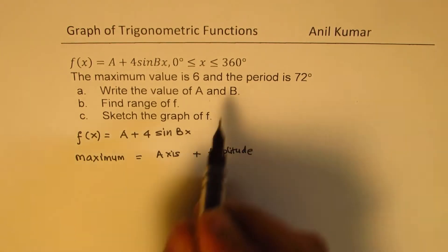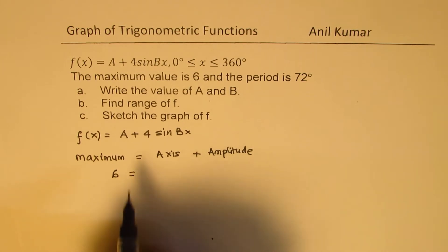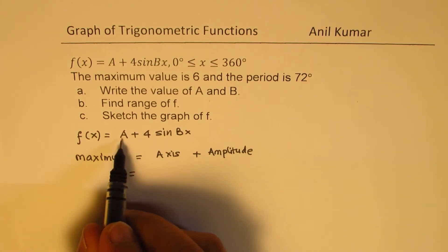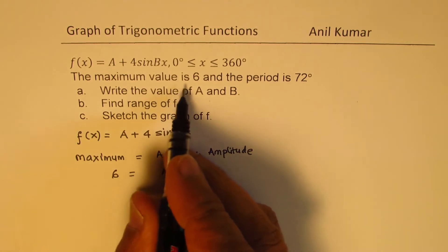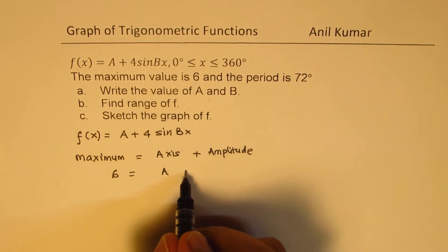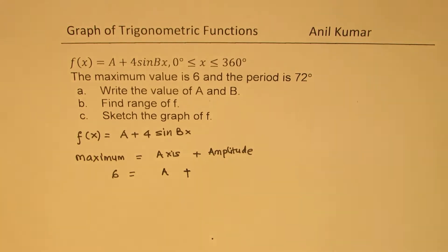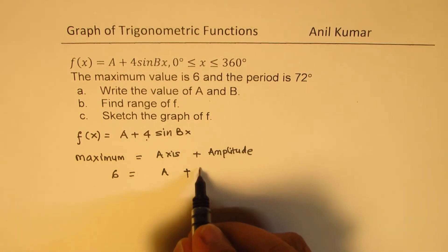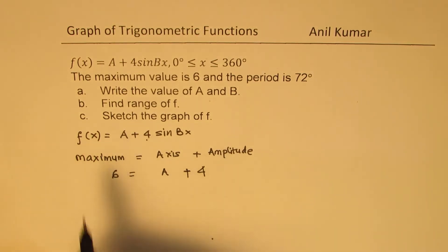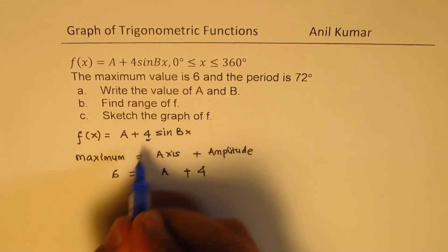So, the maximum value of 6 should be equal to the axis value is given to us as A here, plus the amplitude is given to us as 4. So, this 4, which you see is the amplitude, is 4. So, from the, let me just show you this, where 4 is the amplitude.